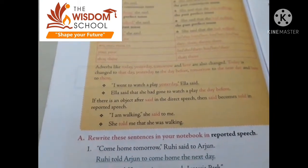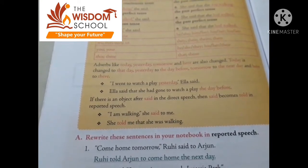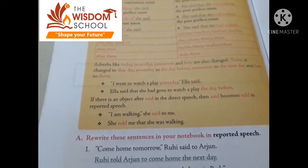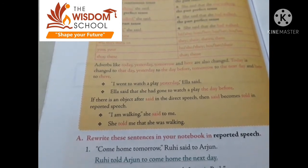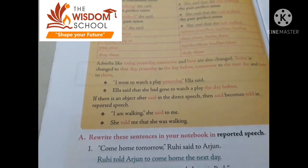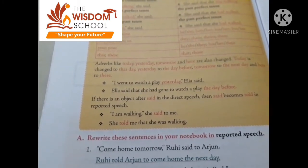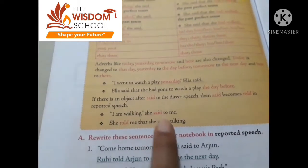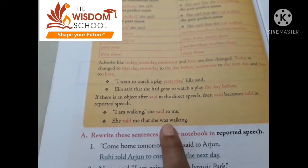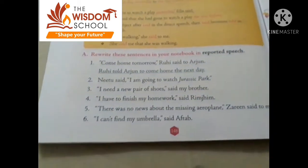If there is an object after 'said' in the direct speech, then 'said' becomes 'told.' For example: 'I am walking,' she said to me — becomes 'She told me that she was walking.' Simple present 'am walking' changes to past continuous 'was walking.'